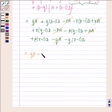qp minus q D minus rp plus rD minus pq plus pD. Now simplifying this we have plus rq minus rD minus pq plus pD.